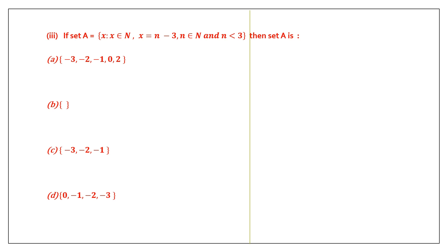Next one. If set A equals this whole thing, let's find out the elements of set A. X is such that X belongs to natural numbers — all elements are natural numbers, which begin with 1 and are positive. Second point: X equals n minus 3. What is n? n belongs to natural numbers — starting from 1, 2, 3 — and there is one more point: n is less than 3. So natural numbers less than 3 are 1 and 2.